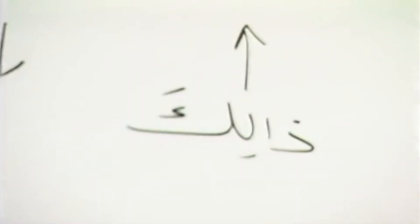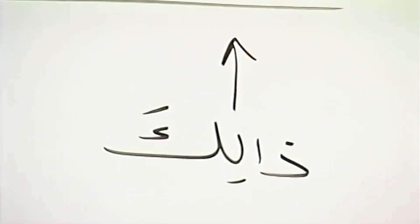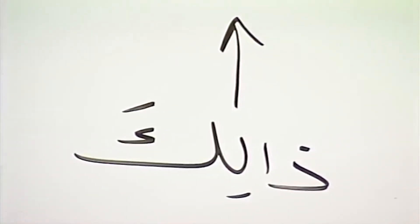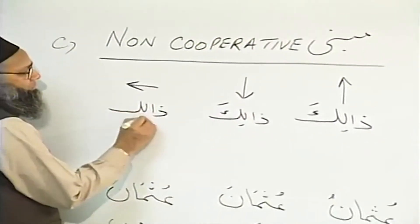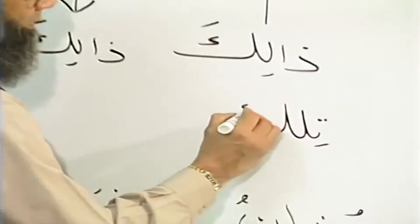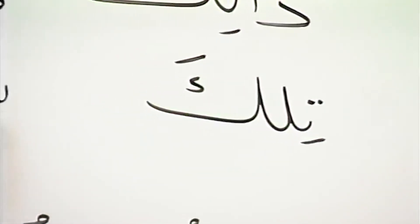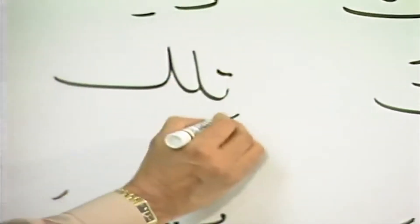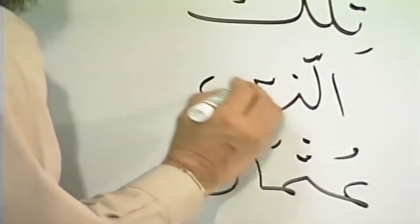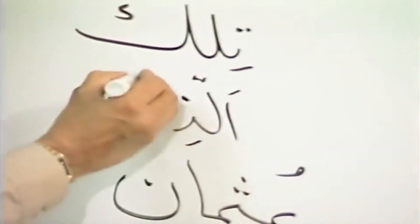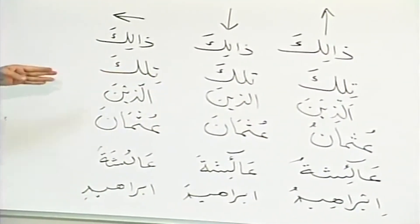A few examples are Dalika. Dalika is the word used for 'that' when you demonstrate a masculine thing. So 'that' masculine is Dalika and 'that' feminine is Tilka. But both remain unchanged - Dalika, Dalika, and Dalika; Tilka, Tilka, and Tilka. Similarly, Alladheena, Alladheena, and Alladheena - this is also a Mabni word. So Zalika, Zalika, Tilka, Tilka, Alladheena, Alladheena, and many others.